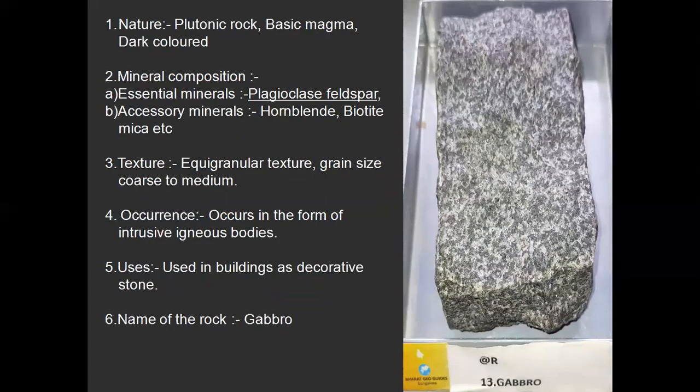Gabbro. It is a plutonic rock formed from basic magma — silica percentage less than 50%. Essential minerals are plagioclase feldspar; accessory minerals are hornblende and biotite mica. Texture is equigranular, with coarse to medium grain size. It occurs in the form of intrusive bodies. It is used as a decorative stone.